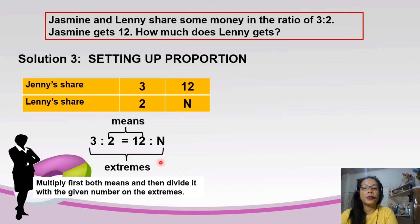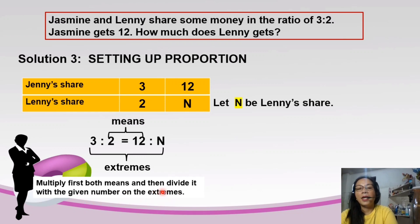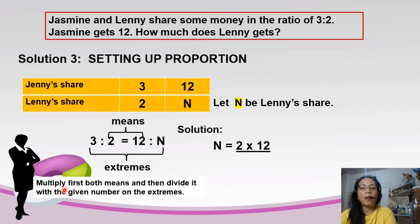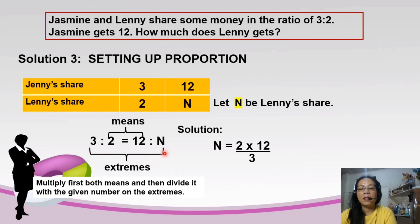Remembering the proportion: we have two parts — the 2 inner numbers in a proportion are called the means, and the 2 outer numbers are called the extremes. We need to remember means and extremes in order to find the value of the missing number. To solve: multiply both means first, then divide by the given number in the extremes. The only given number in the extremes is 3, because n is still to be discovered.